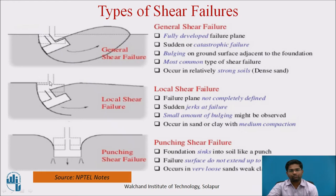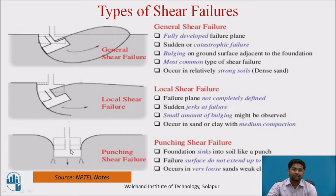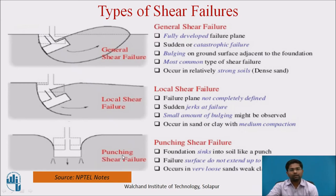These two failures — general and local — are tilting failures. Punching shear failure is like punching papers: the foundation is pressing inside the soil sample, going inside with a linear amount. This condition of punching shear failure occurs when the angle of resistance is less than 28 degrees.